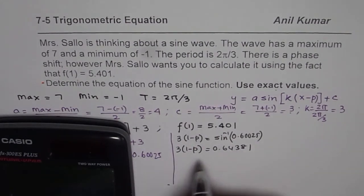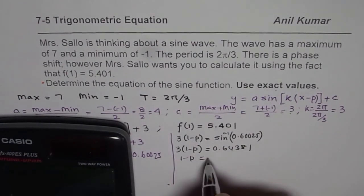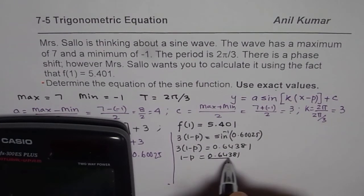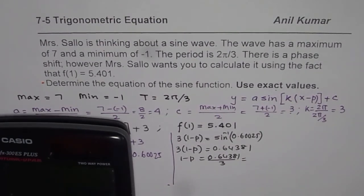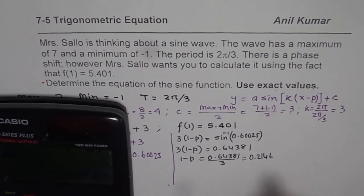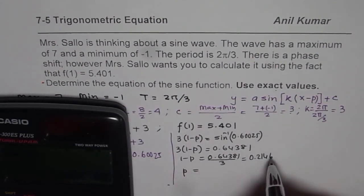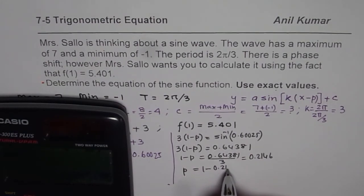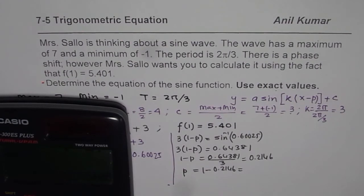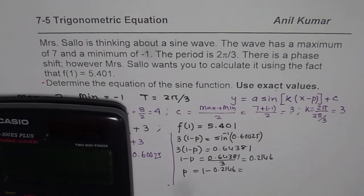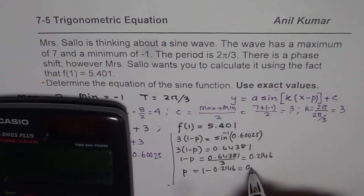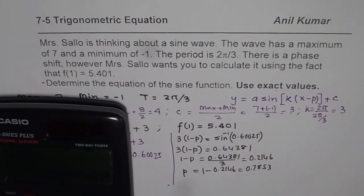We get 3(1 - p) = 0.64381. So to calculate p, we will divide by 3. We have 1 - p = 0.64381 divided by 3 which is equal to 0.2146. From here we can find p, and p is equal to 1 minus 0.2146. I will take the negative of this and then we will add 1 to it. What we get here is 0.7853.